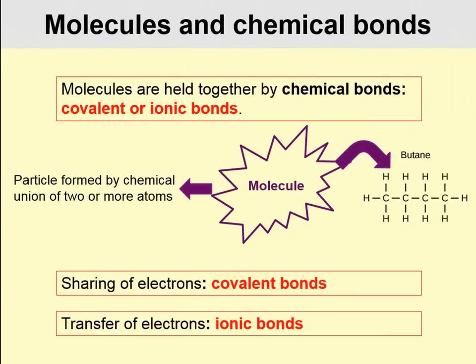Molecules are held together by chemical bonds. We're going to talk about covalent and ionic bonds here. Here's an example of a molecule — this is butane, a straight-chain hydrocarbon. It is a molecule because it's two or more elements held together by chemical bonds.